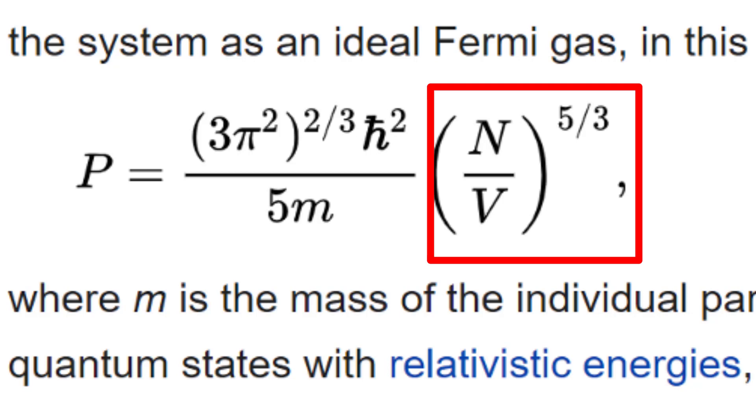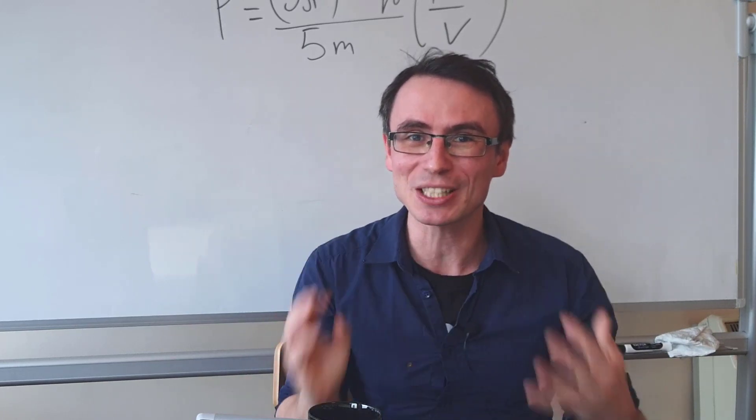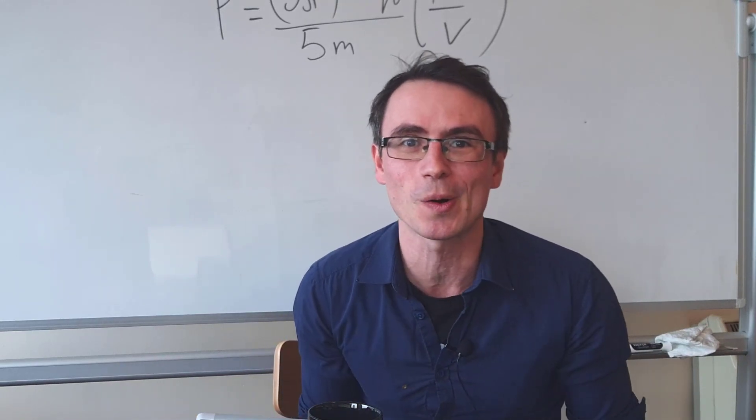In a neutron star, this n over v term is actually probably the biggest it could ever be outside of a black hole.